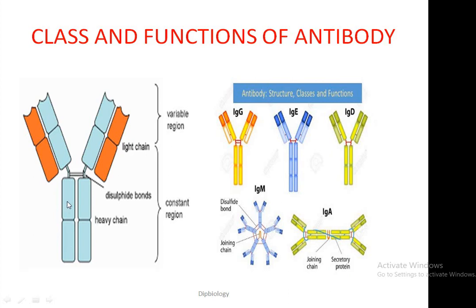The heavy chains possess curved parts in the tail regions. Because of antigen determinants in the tail regions of heavy chains, we can classify immunoglobulin molecules as IgG, IgM, IgA, IgD, or IgE class, each with its own class of heavy chains in the tail regions.